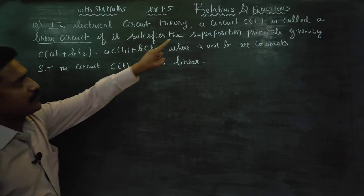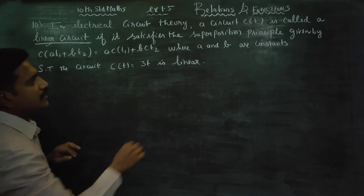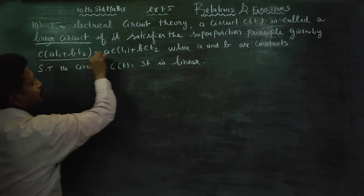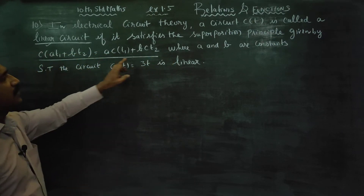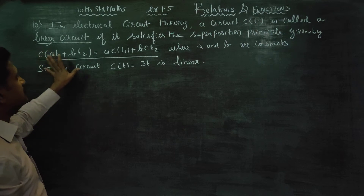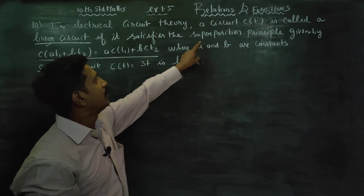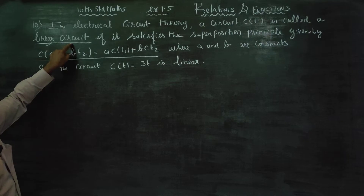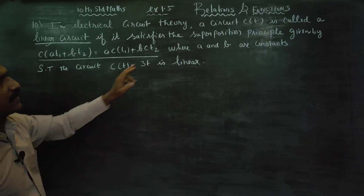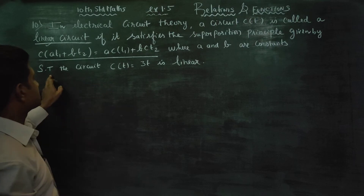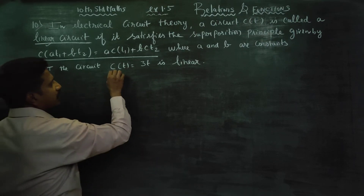For example, C of T is linear. In the superposition principle, you can satisfy the LHS and RHS — equalize them. That is called a linear circuit. This function is linear. Where A and B are called constants, show that the circuit is linear. This is linear — we can prove it.